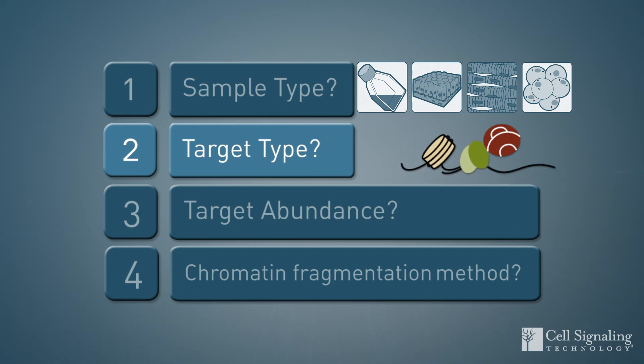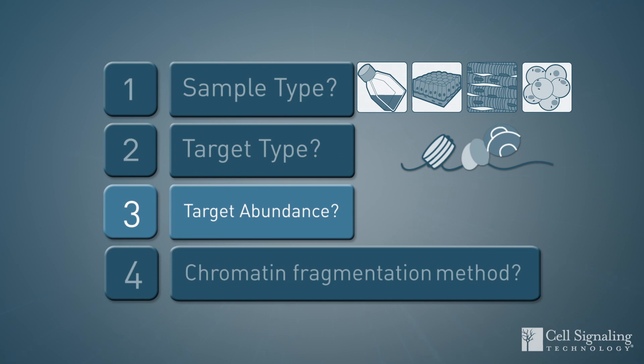Histones, transcription factors, and cofactors bind to DNA with varying strength, affecting ChIP efficiency. Other factors to consider are the abundance of the target protein in your sample and your preferred method for chromatin fragmentation.